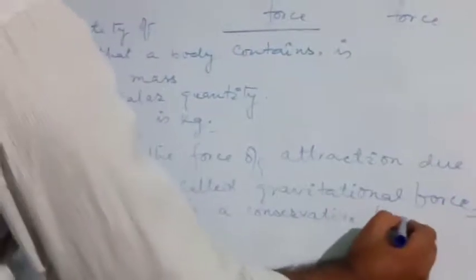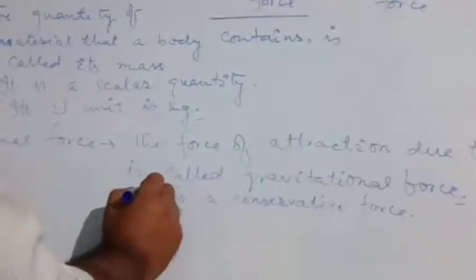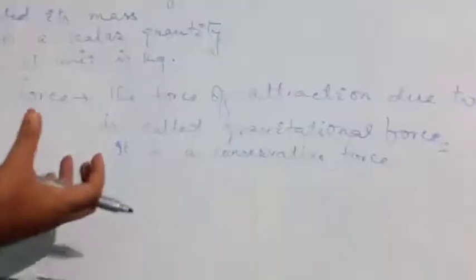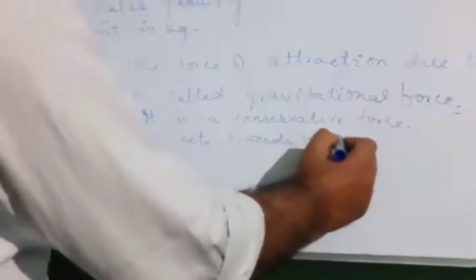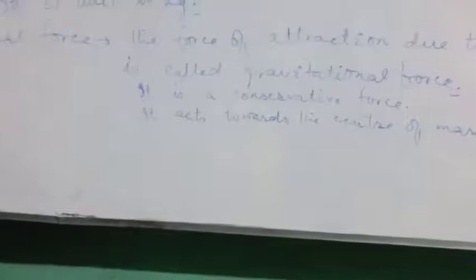Force is a Vector Quantity — it has both magnitude and direction. The direction of Gravitational Force acts towards the Center of Mass. This force is of conservative nature, it is a Non-Contact Force, and it follows the Inverse Square Rule.